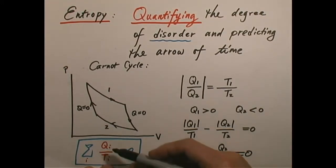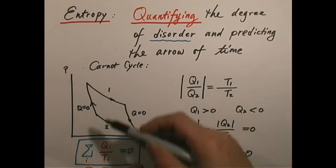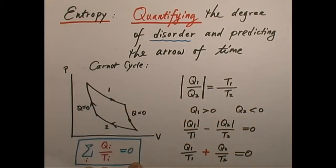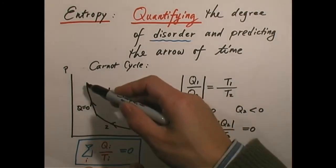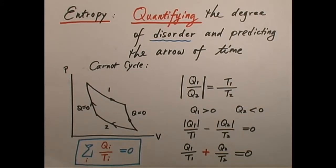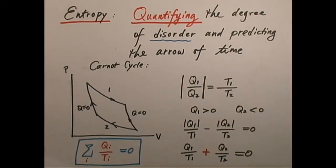So there's something interesting about this quantity q over T. Even though the total of all the heats — q1, q2, q3, q4 — does not equal zero, this quantity q over T has a net change of zero over the whole cycle. When the net change of a quantity over a whole cyclic process equals zero, that hints that this quantity might actually be a function of state, meaning it depends on the state only.